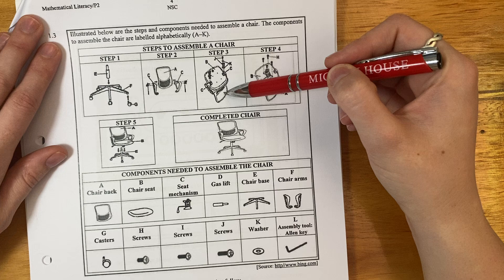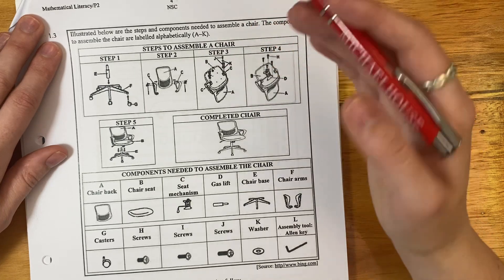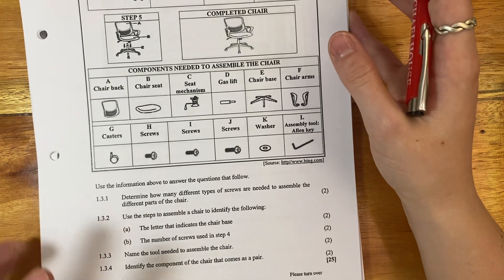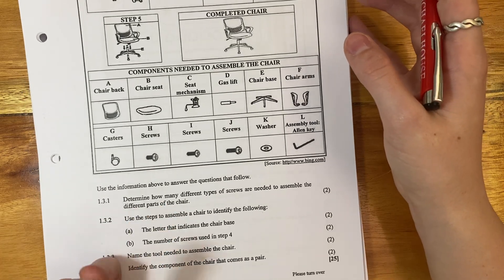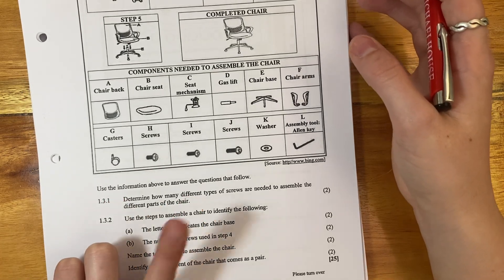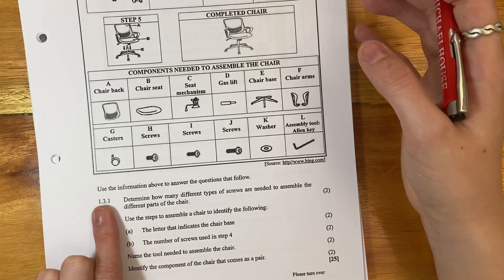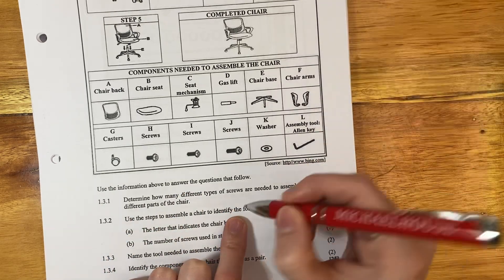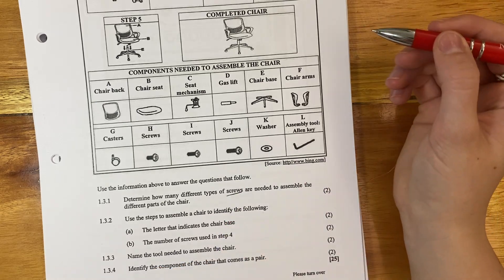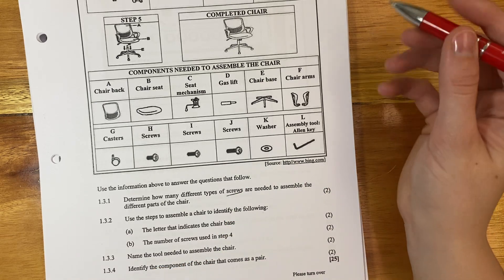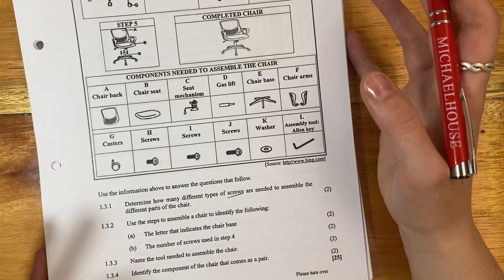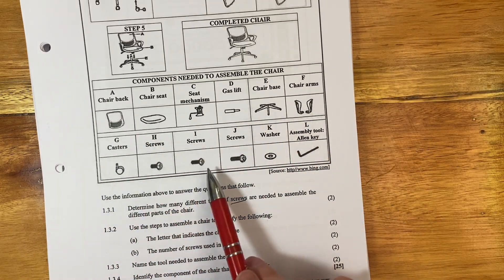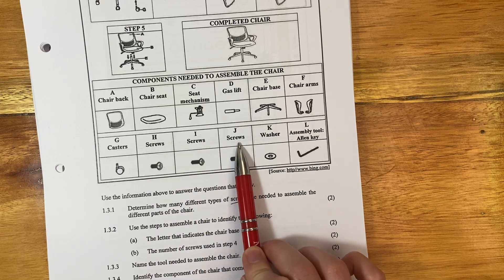So now we need to use both of these to answer our question. Don't spend too much time stressing over this. Go to your questions, they'll help kind of steer your thinking. 1.3.1: Determine how many different types of screws are needed to assemble the different parts of the chair. So it's talking about the components. So we look here, there's no screws at the top, but here's some screws at the bottom. 1, 2, 3 different types of screws.